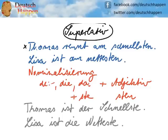As you can see, he runs — how? — am schnellsten. Our superlative is coming after the verb that it describes. In our next example: Lisa ist am nettesten — Lisa is the nicest.